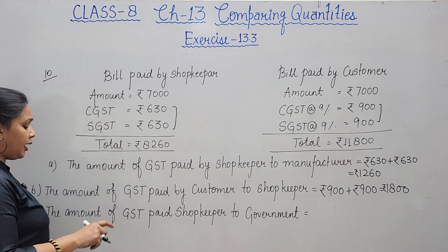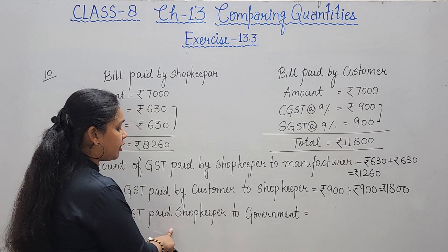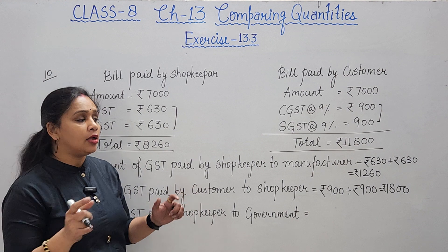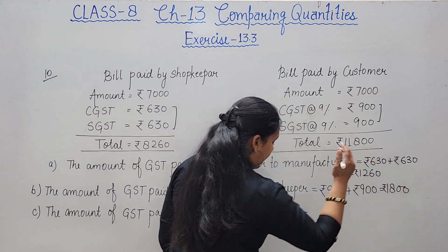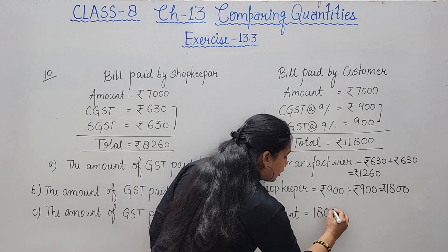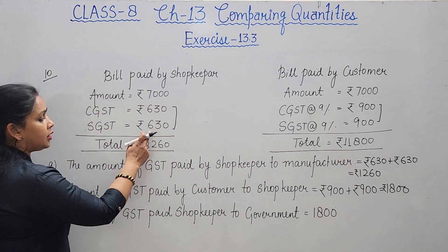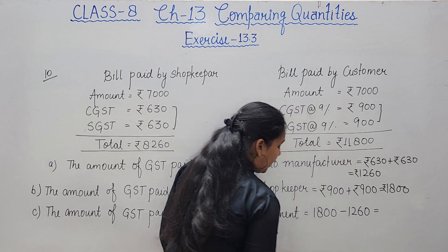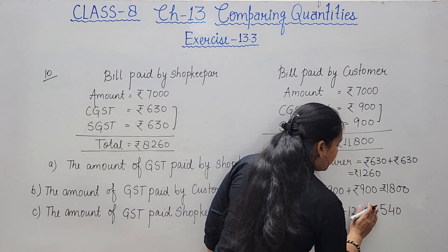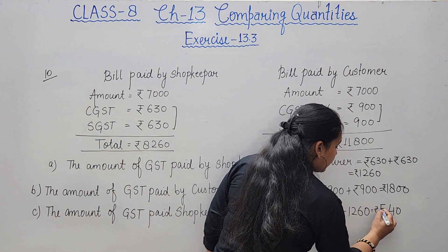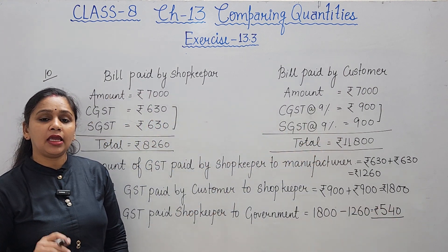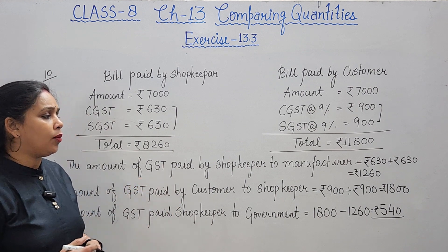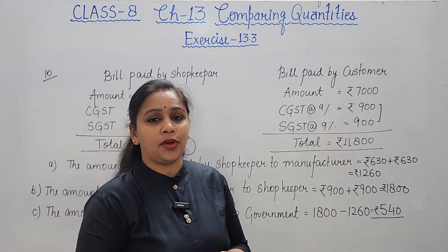Third: GST paid by shopkeeper to government. The shopkeeper collected 1800 rupees GST from the customer but paid 1260 rupees GST to the manufacturer. So GST paid to government = 1800 - 1260 = rupees 540. These are the three answers to question number 10.